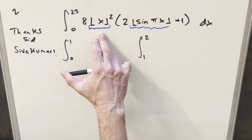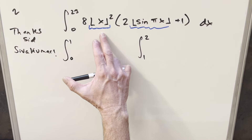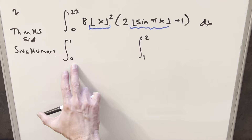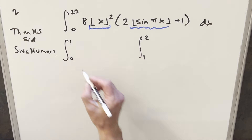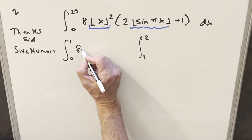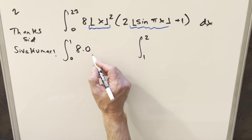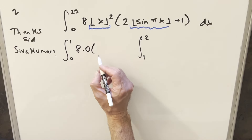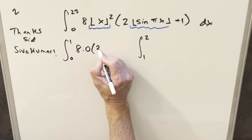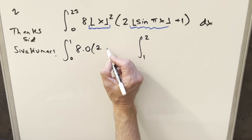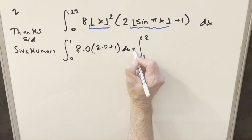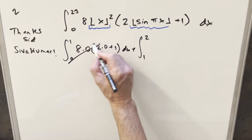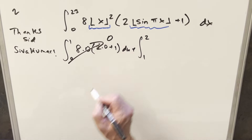In the first region, for the floor of x, it's going to round us down to the lower bound 0. So we have 8 times 0 squared — this zeros everything out. And sine of 0 is 0, so this first integral is just 0. We're not too worried about that one.